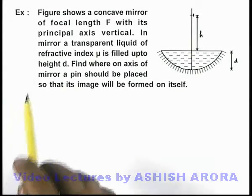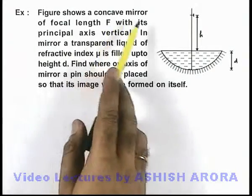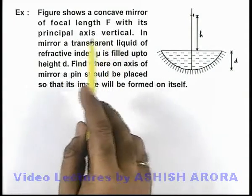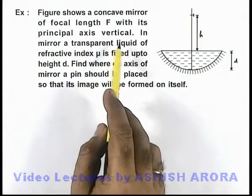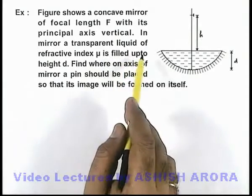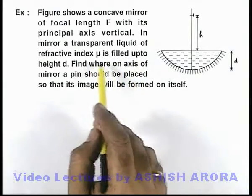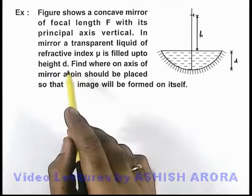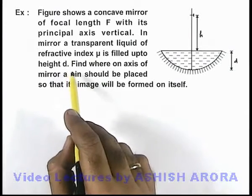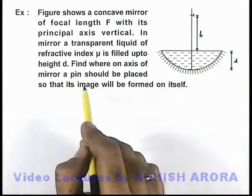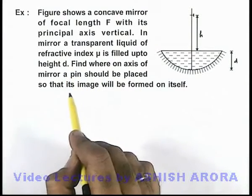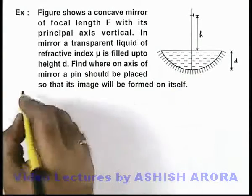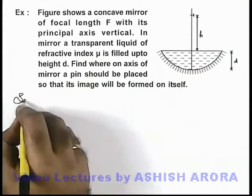In this example, the figure shows a concave mirror of focal length f with its principal axis vertical. In the mirror, a transparent liquid of refractive index mu is filled up to a height d, as we can see in the figure. We are required to find where on the axis of the mirror a pin should be placed so that its image will be formed on itself.